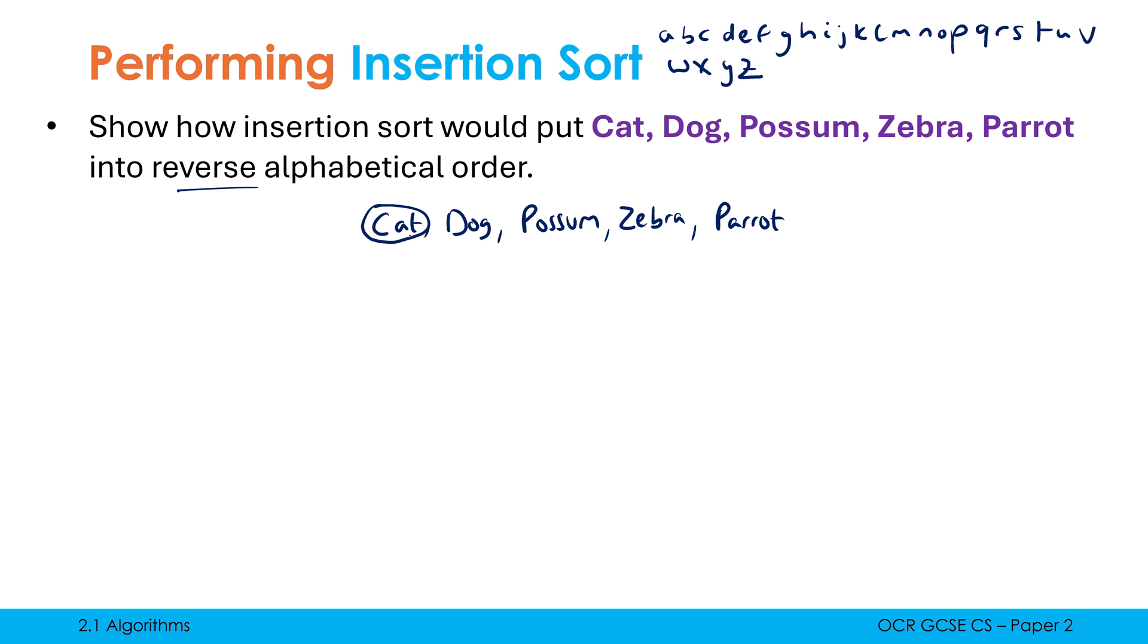And I need to move dog into the sorted part. Well, dog, if I'm doing it in reverse alphabetical order, because D comes after C, therefore dog needs to go before cat. So when we do words, we do it based on the first letter of our word. And if we end up with it being the same letter like we're going to have with the P's with possum and parrot, we look at the next letter. Possum needs to get moved into this list. Possum should now go in first. And zebra goes in first. It shoots right to the start.